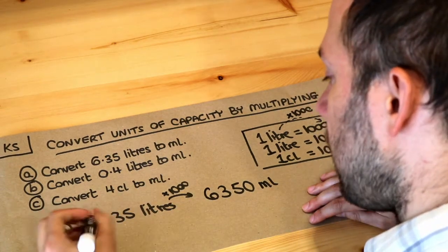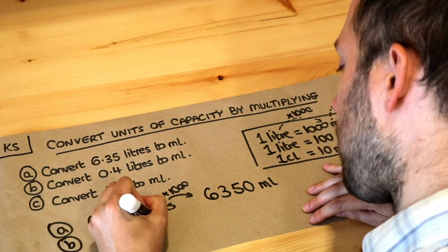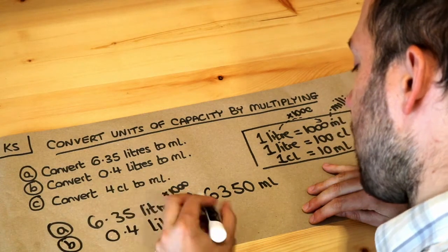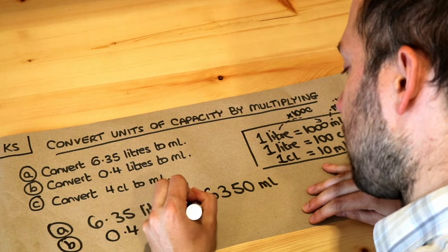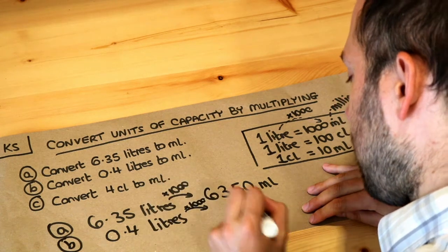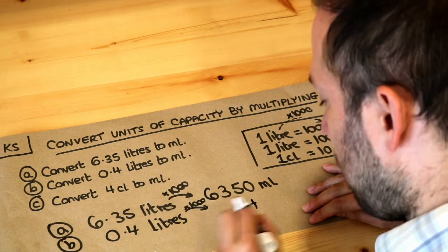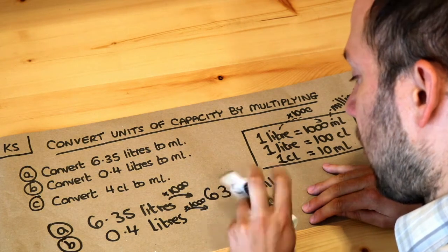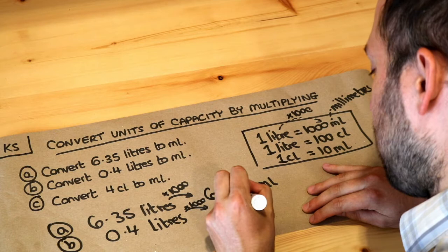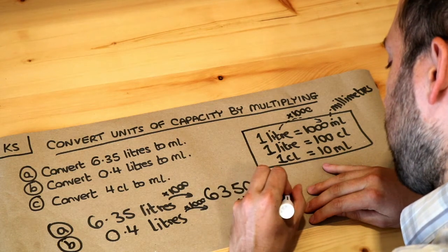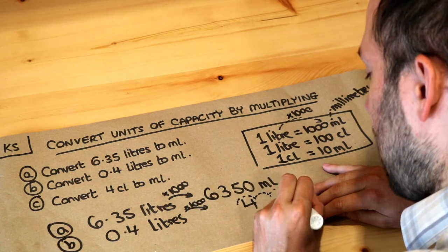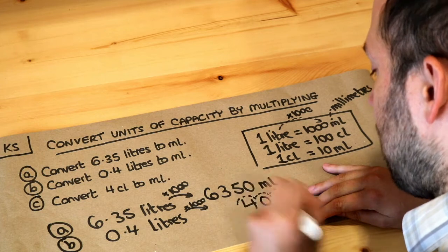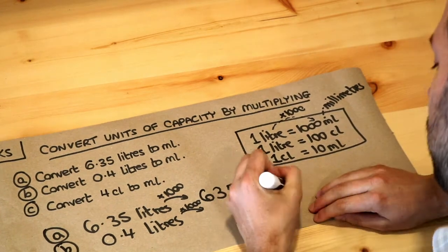What about B? We've got 0.4 liters. And again we need to times by a thousand to get to milliliters. Now if I just put the four here and put the decimal point just before, then we need to move the decimal point three times because we're timesing by a thousand, three zeros. One, two, three. So the decimal point is now at the end. We fill in the gaps with zeros, so we can see it's 400 milliliters.